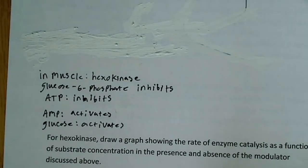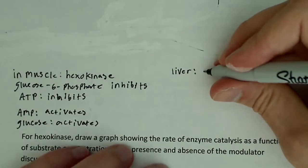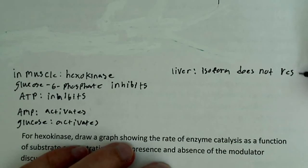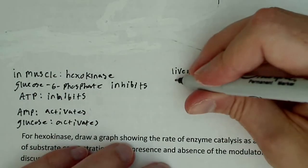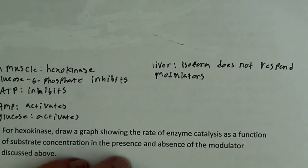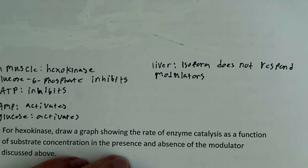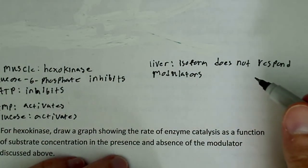Now, the liver isoform, so in the liver, the liver isoform does not respond to allosteric modulators. So that's really what the key is here. In the liver, the isoform just doesn't respond to these allosteric modulators. And since the liver is more likely to store the glucose as glycogen, because that's what the liver prefers to do, there's always a lot of glycogen in the liver, so it prefers to store the glucose as glycogen, the first step to which is to make glucose 6-phosphate. So basically, the liver does not respond here to these, and that's the main difference.